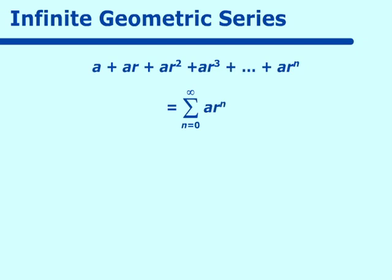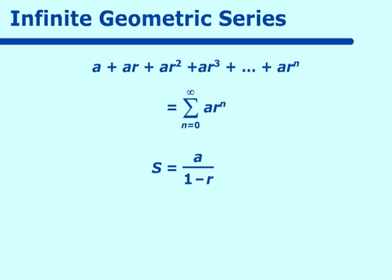What if we want to find the sum of an infinite geometric series? We have a formula for that: the sum of a geometric series is given as A over 1 minus R. Using Taylor polynomials, how do we go from that summation formula to the series itself? Let's make f of x equal to A over 1 minus x and use our development of a Taylor polynomial to figure this out.